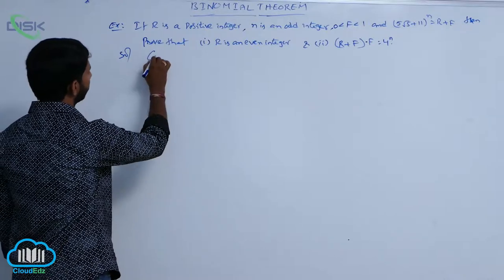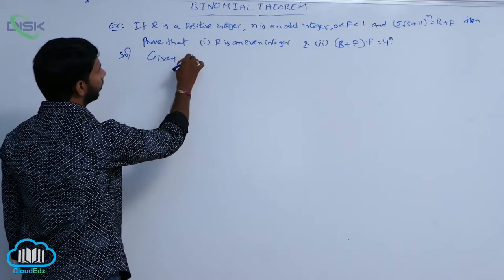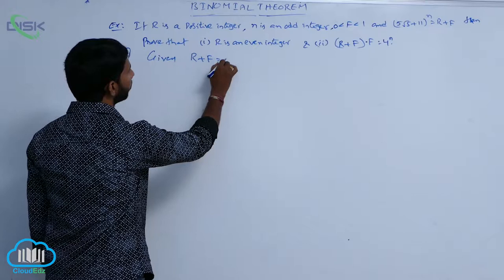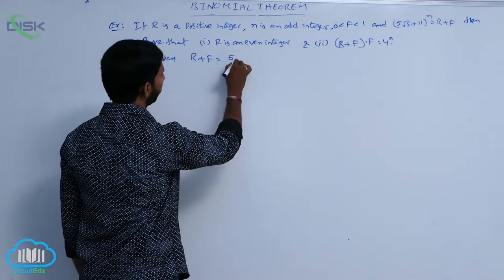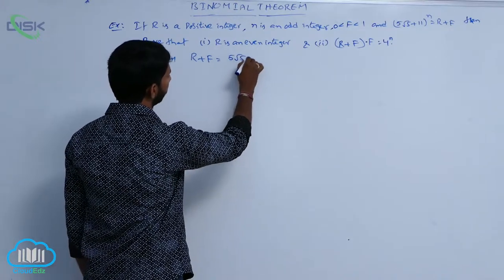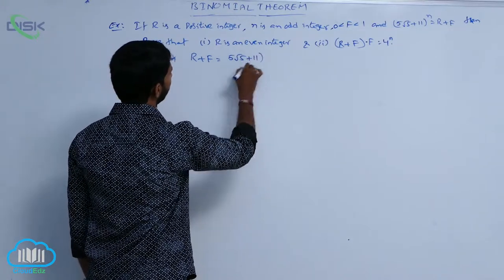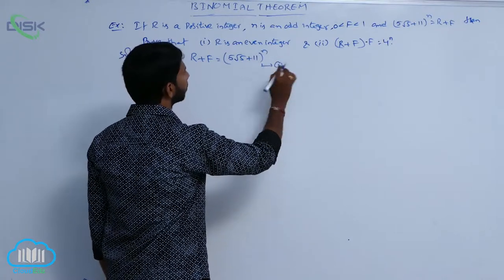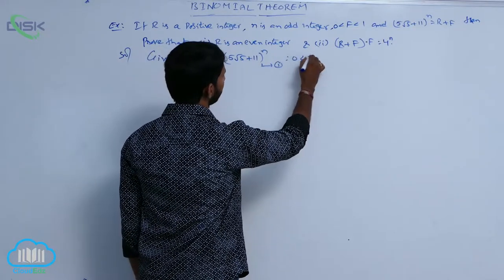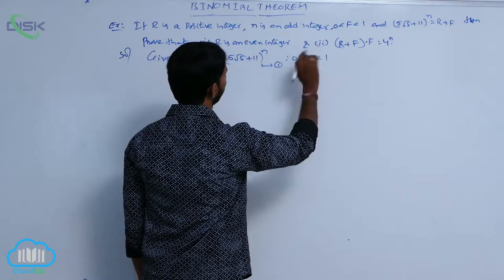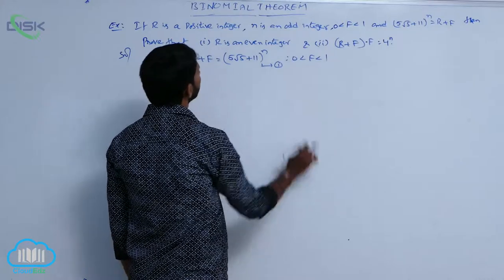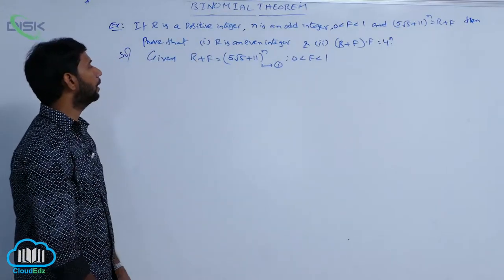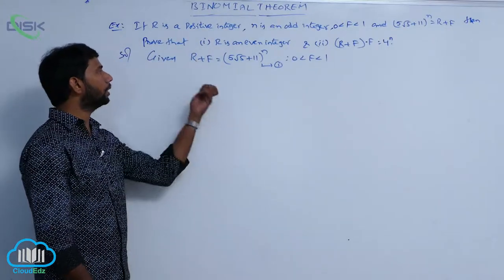Given: R + F = (5√5 + 11)^n — consider this as condition number 1 — with 0 < F < 1. Now find the conjugate value.